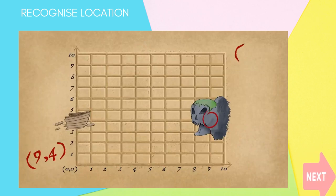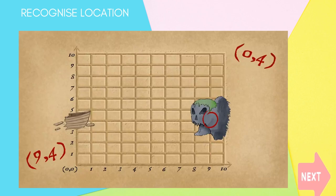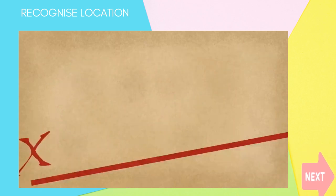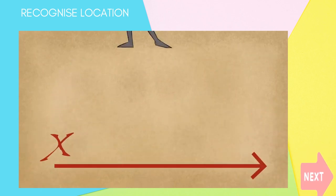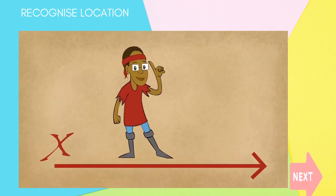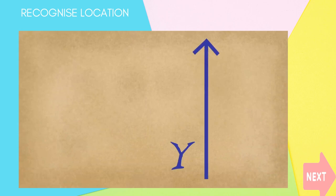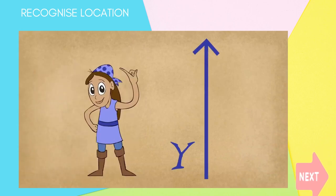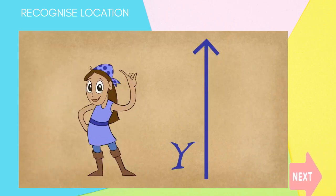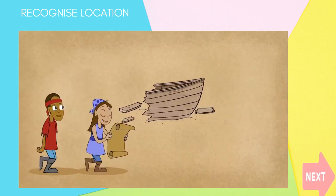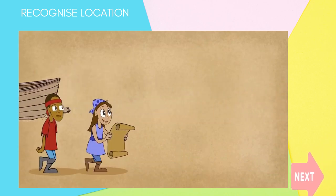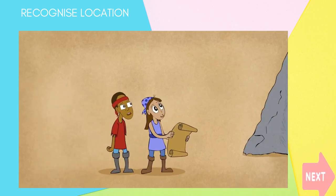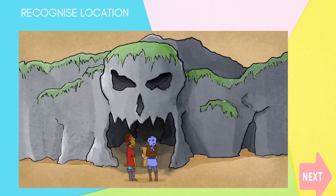Now one more with the ordered pair 0, 4. Remain at the origin, count 4 from the floor. On the x-axis, count to the right. On the y-axis, count from the ground. That's how a coordinate point is found.